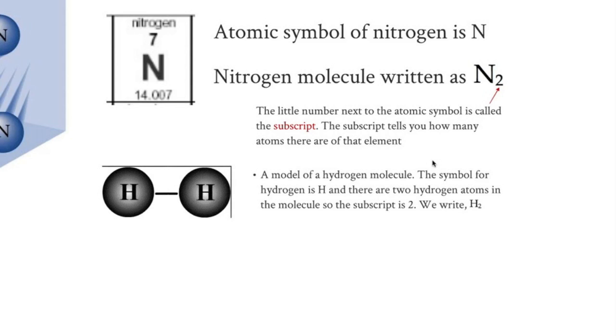Another example, this is a model of a hydrogen molecule. The symbol for hydrogen is H, and there are two hydrogen atoms in the molecule, so the subscript is 2. Thus, we write H2 for the hydrogen molecule. A molecule made of two of the same element is called diatomic. Diatomic simply means two atoms. Di is the Greek prefix for two, and atomic is also Greek in origin, meaning an indivisible particle or atom.